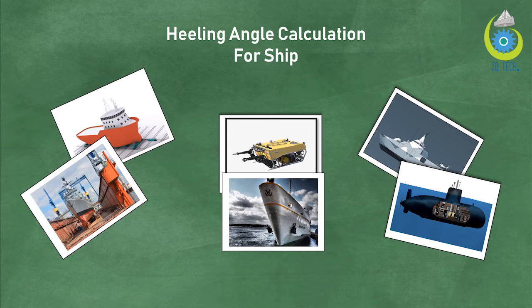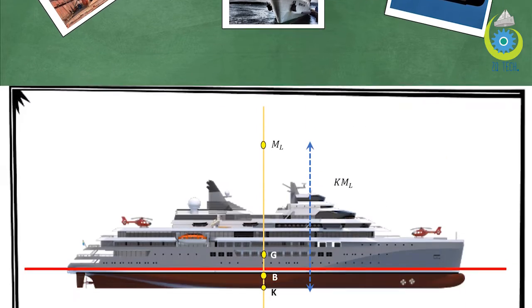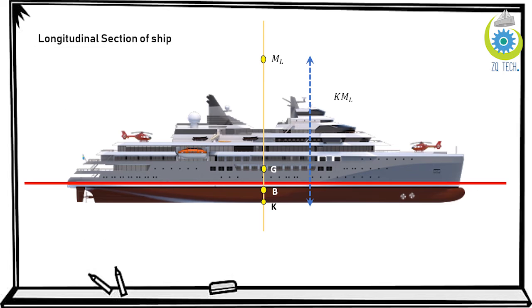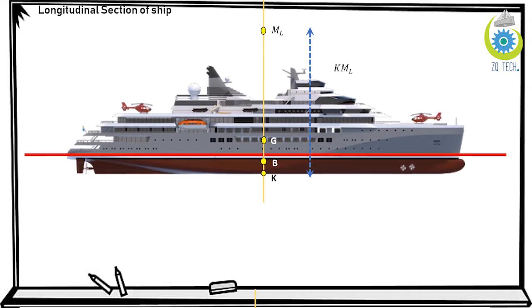Let's move forward. This is the longitudinal section of the ship, and you can see that various points are present here. K is the keel, B is the center of buoyancy, CG is the center of gravity, while ML is the longitudinal metacenter. An important thing is that this longitudinal metacenter is different from the transverse metacenter. KML is the keel to longitudinal metacenter distance, and similarly the other distances are KB and KG.